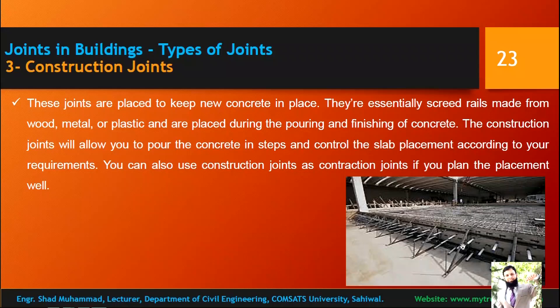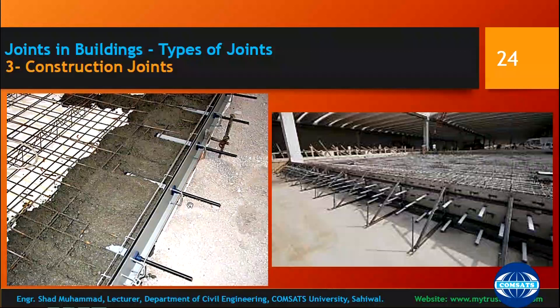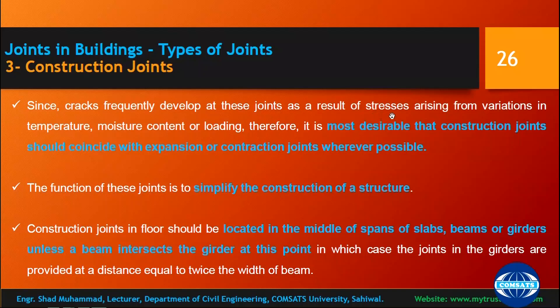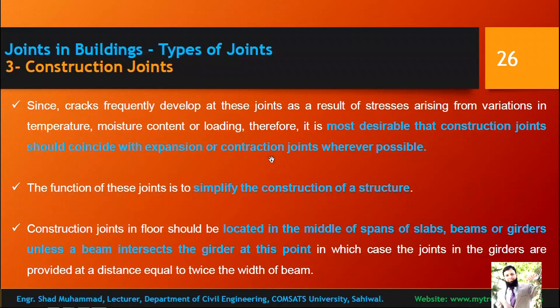Dowel bars are provided externally in construction joints — this is the screed rail. When concreting on the second day, form work is placed and there will be proper bonding. These are the construction joints for floor concreting, showing the dowel bars. Since cracks frequently develop at construction joints due to stresses from variations in temperature, moisture content, and loading, it is most desirable that construction joints coincide with expansion and contraction joints wherever possible.